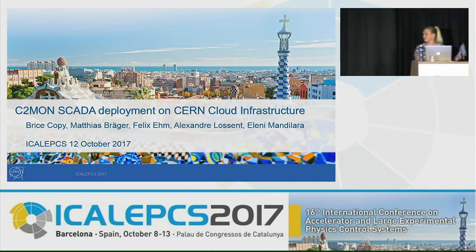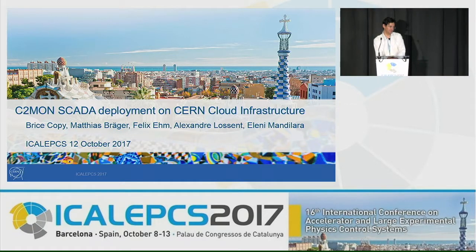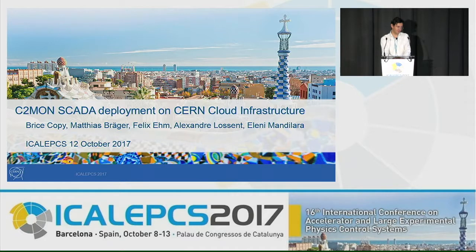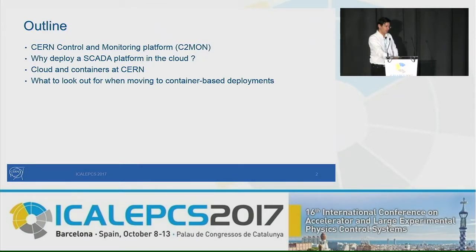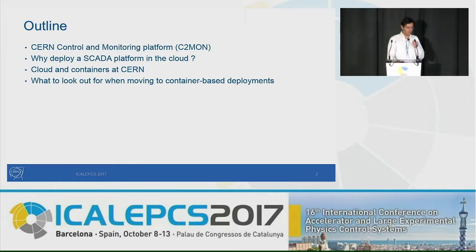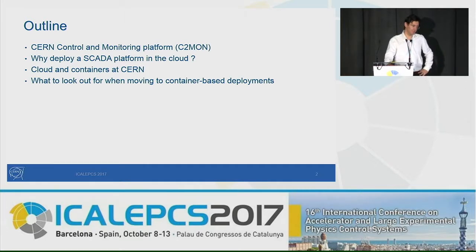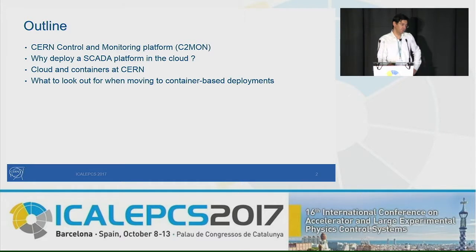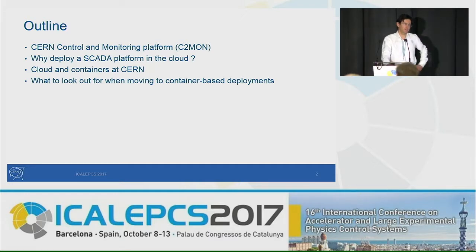Thanks for the introduction. I'm going to report about the deployment of C2MON, or SCADA, to the CERN cloud infrastructure. First I'll tell you what C2MON is — the CERN control and monitoring platform. I'll explain the potential advantages of putting a SCADA platform like C2MON in the cloud, review the different options for deployment, and what to look out for. Even if you're not using the same platform as us, I hope there will be some good input if you're considering moving something to the cloud.